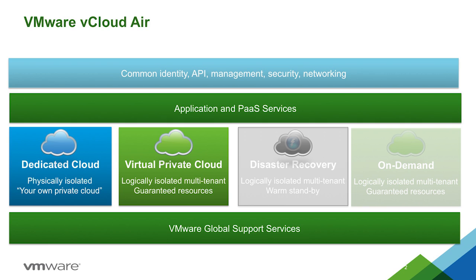The biggest difference between the dedicated and virtual private cloud is that with a VPC, all physical resources are shared, including servers, network, and storage, but logically isolated and guaranteed. While in a dedicated cloud, your compute and memory are reserved on your own physical servers. The network and storage are still on a shared infrastructure, but when it comes to the compute, you'll be the only customer on those servers.